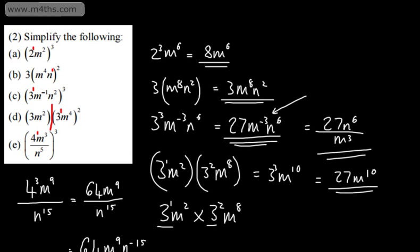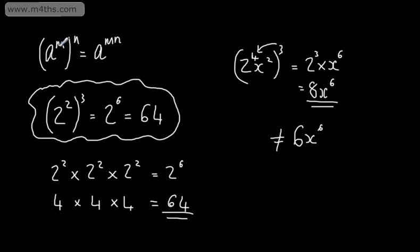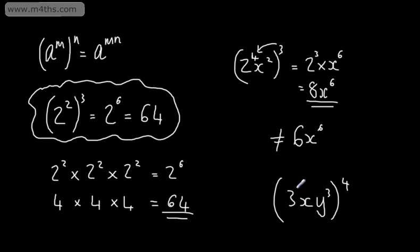So let's go back and look at the law. If we have a to the power of m raised to the power of n, we multiply the powers. Again, if we don't have an index on one of the terms — for example, 3x and y cubed all to the power of 4 — we write a little 1 on each term without a shown power, because we're multiplying the powers. We simply multiply by the power, not any of these values. That is the law for raising to a power.